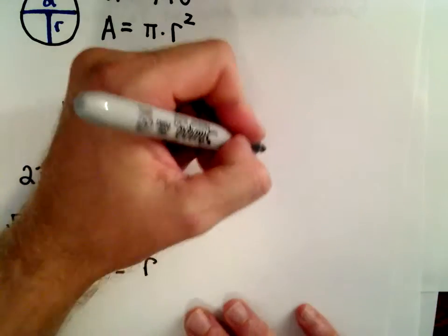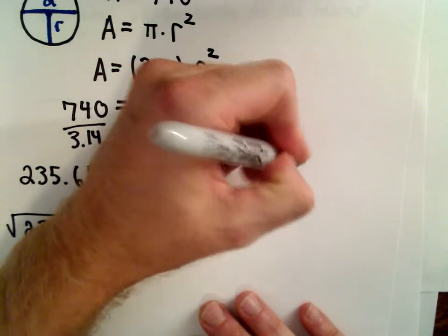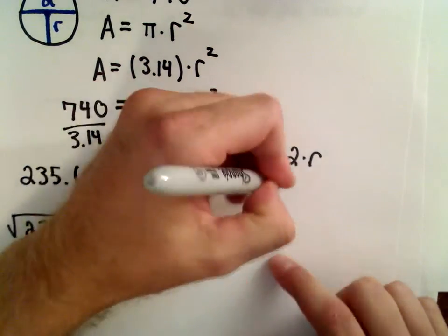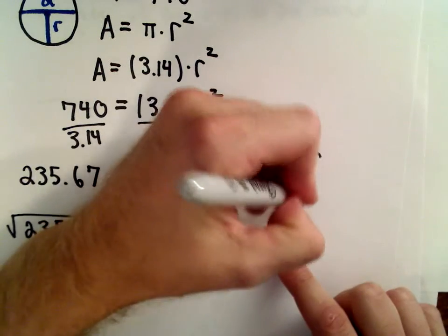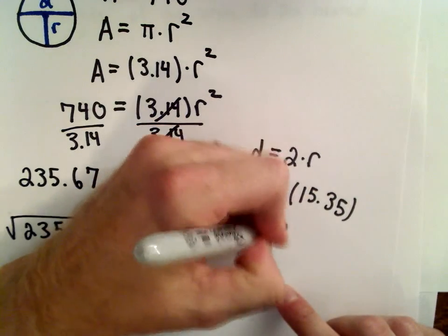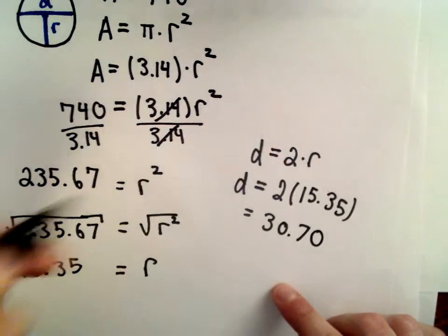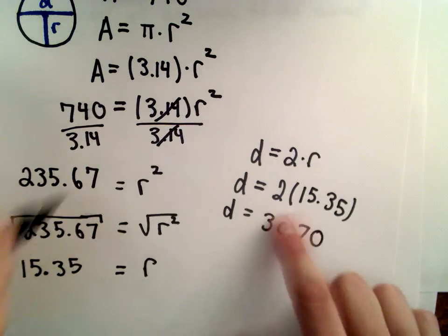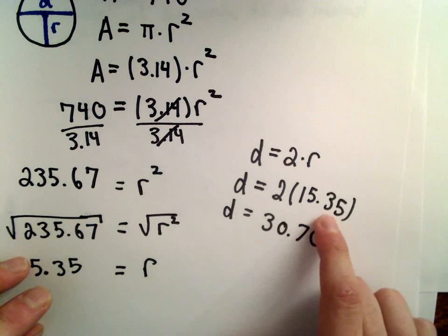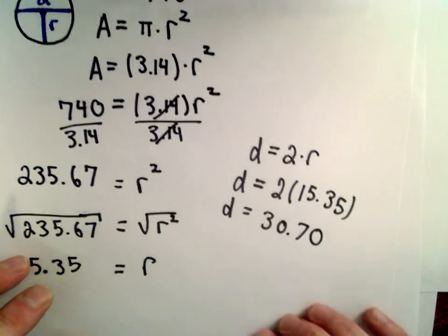Okay, so we said that the diameter, that's going to be twice the radius. We have to double that. So the diameter is going to be 2 multiplied by 15.35. That's going to give us 30.70 after doing the arithmetic. So 2 times 15 is 30, 2 times 35 is 70. So that's where I'm getting the 30.70.